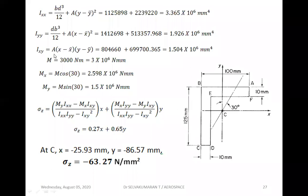Ixy = Σ A·(x − x̄)·(y − ȳ): that is A1·(x1 − x̄)·(y1 − ȳ) + A2·(x2 − x̄)·(y2 − ȳ). Substituting all values gives Ixy. The given bending moment is 3000 Nm acting on a plane inclined at 30 degrees to the vertical axis.